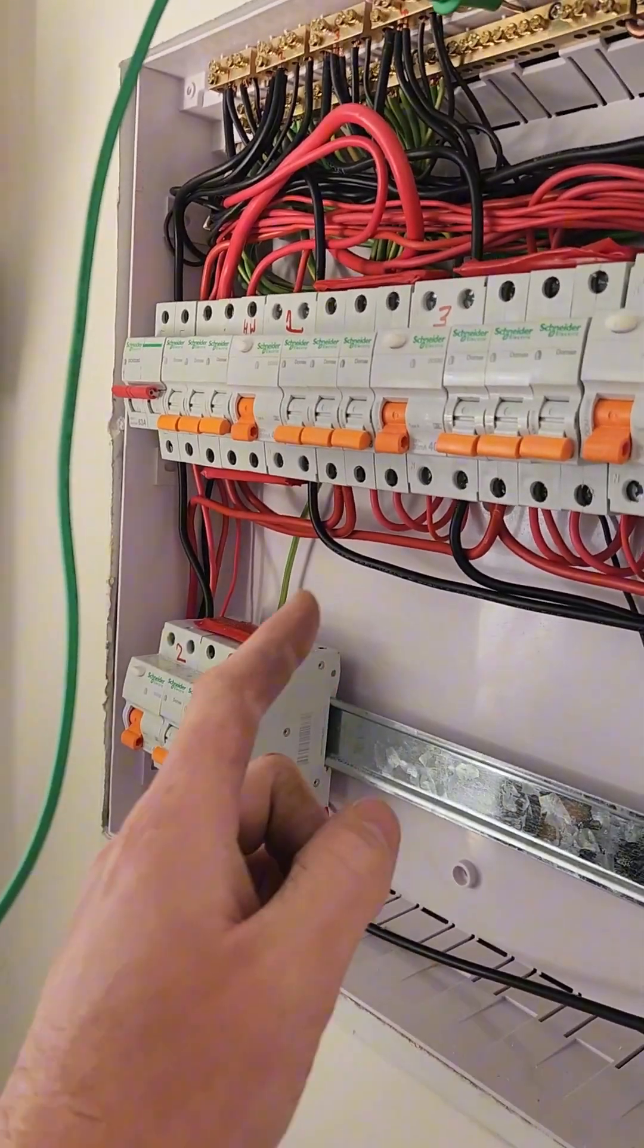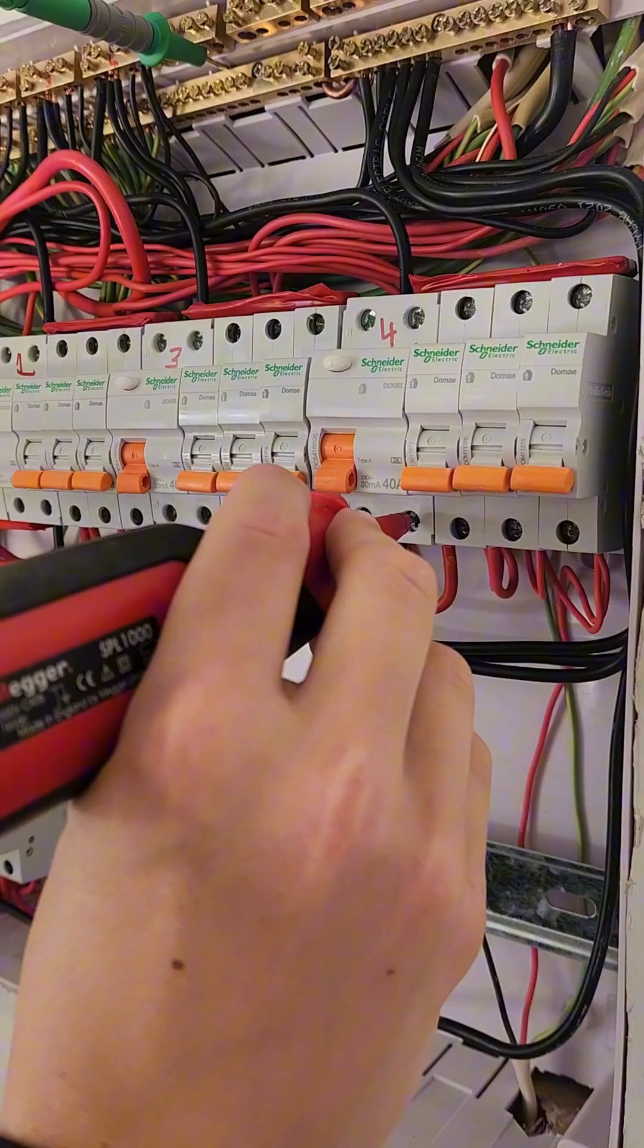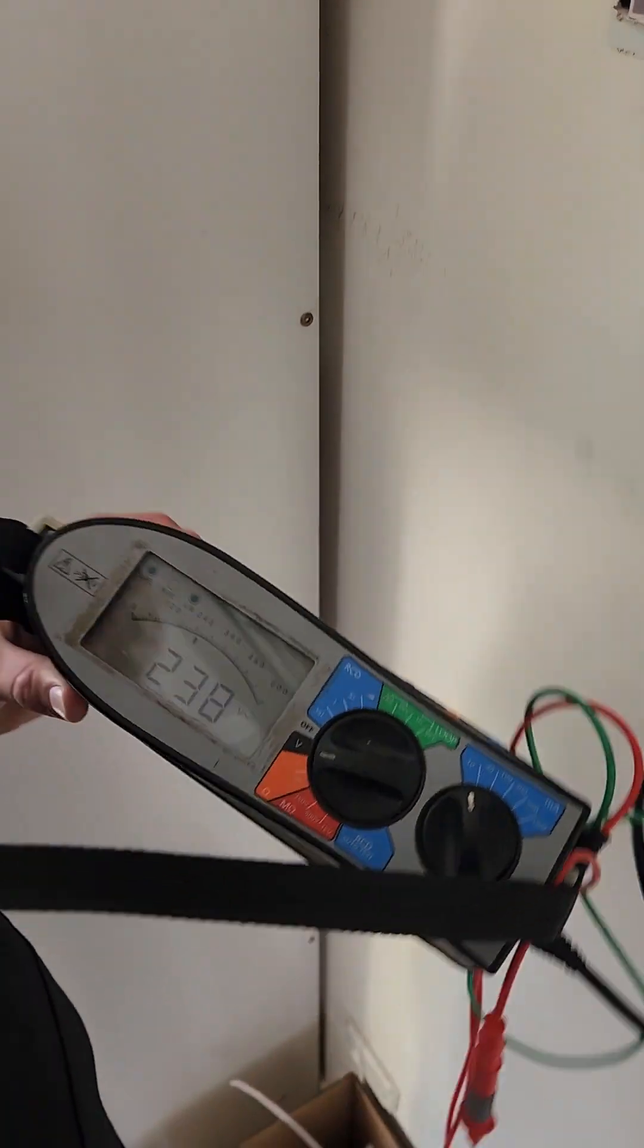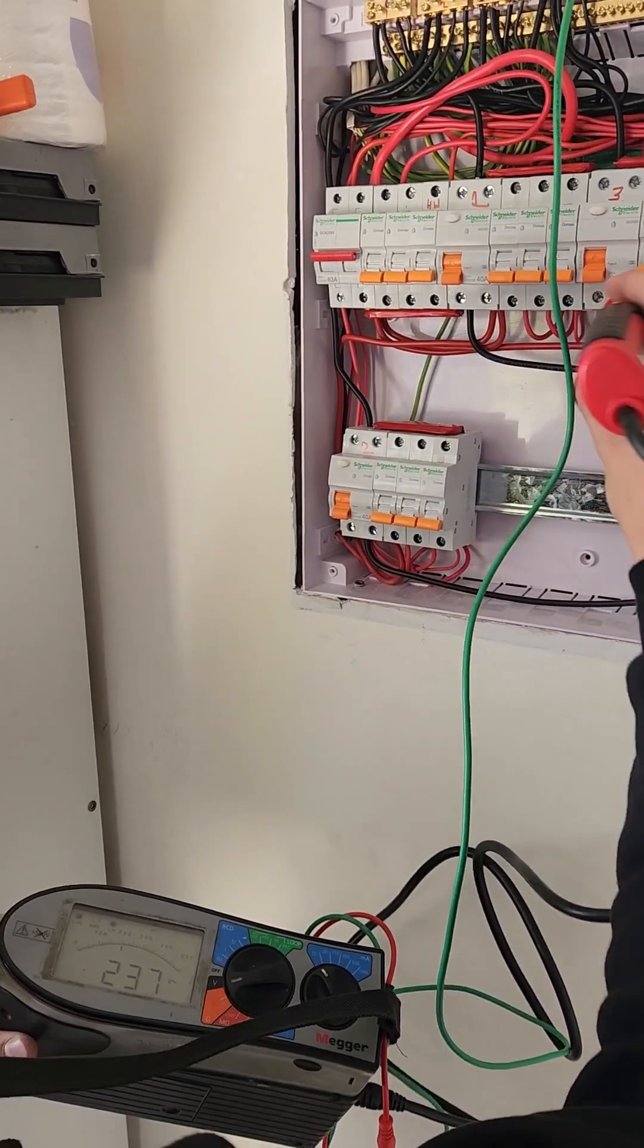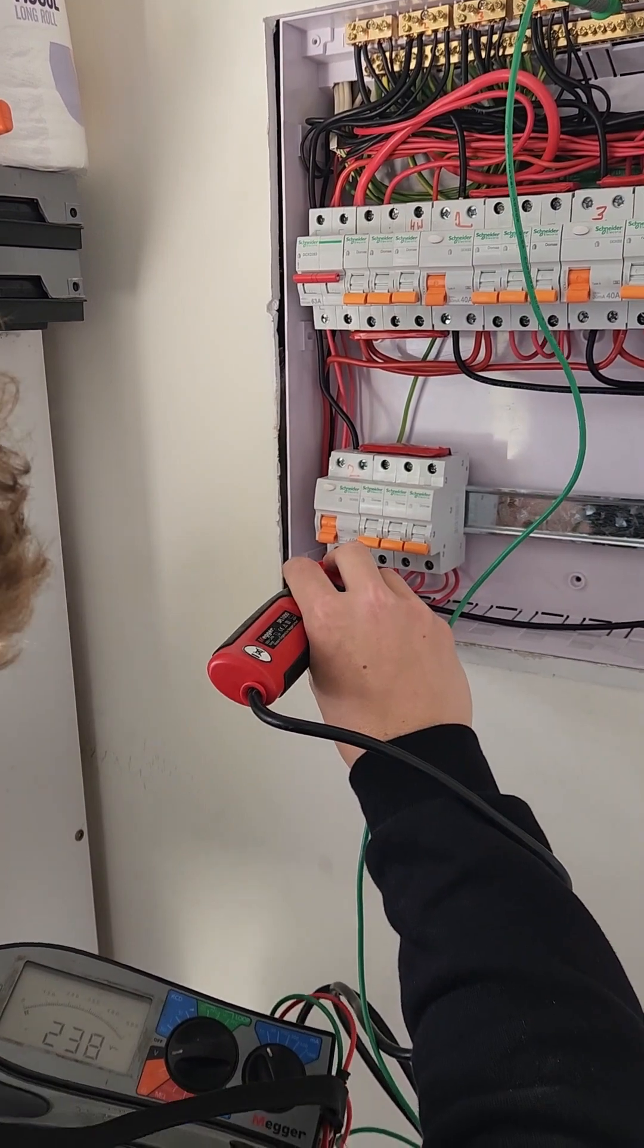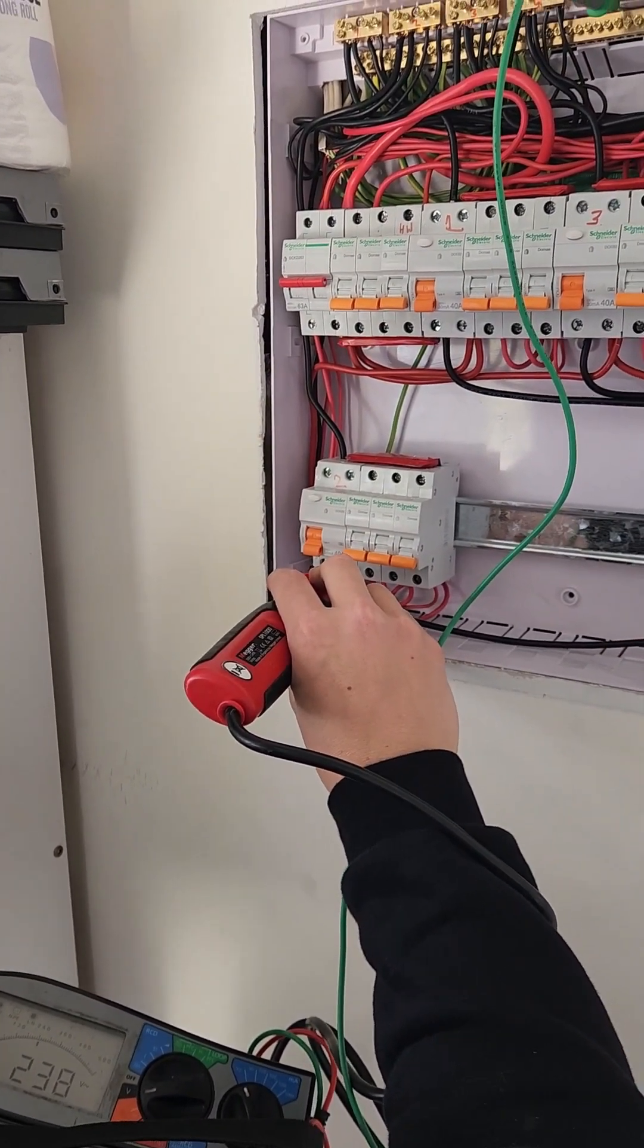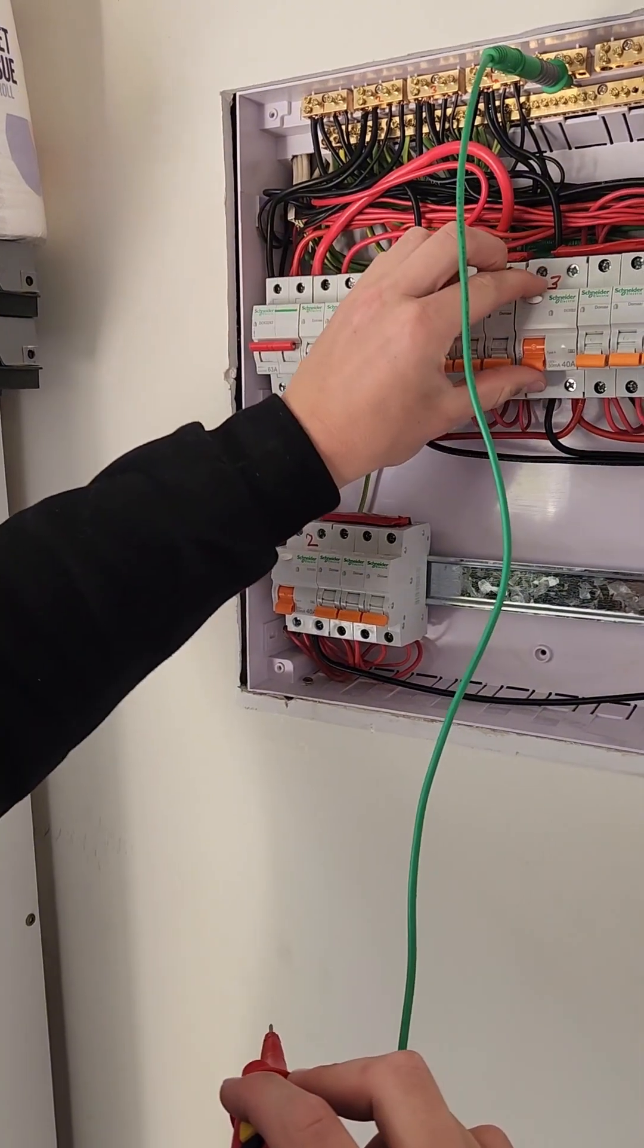And now we should also have it at each RCD. And the bottom RCD. Now you can flick all of the RCDs on. Just the RCDs.